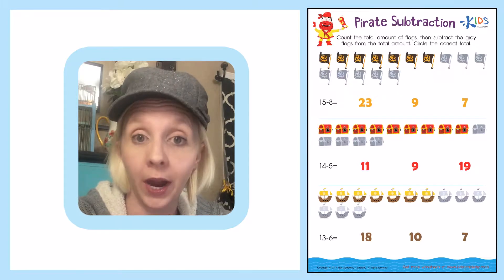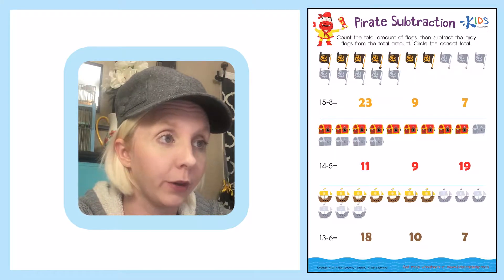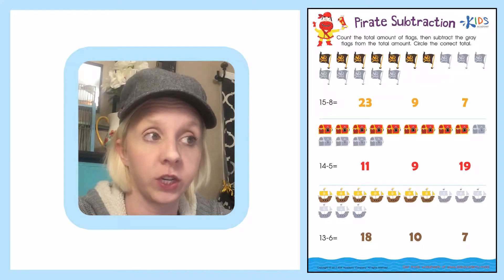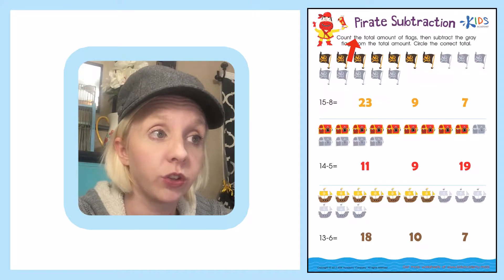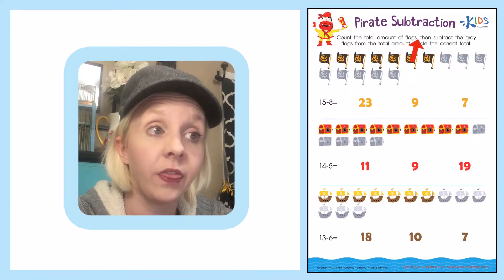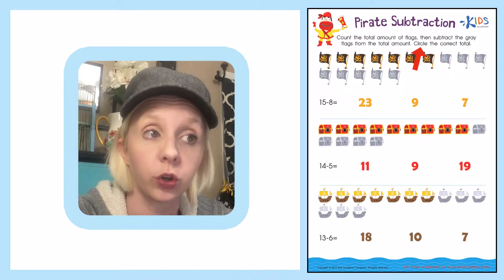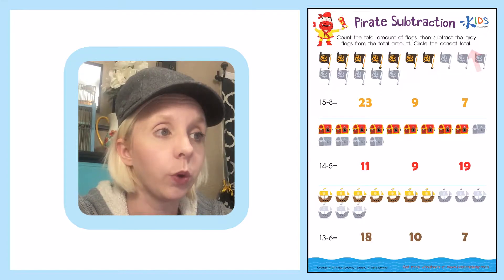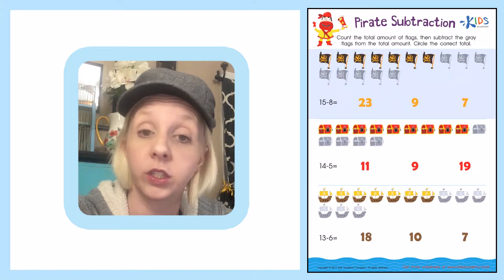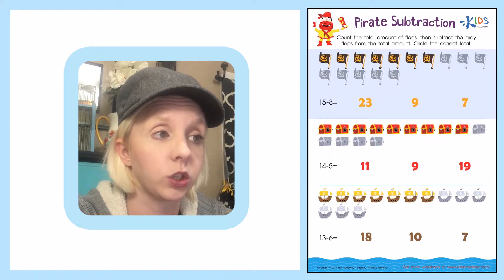The name of our worksheet is called Pirate Subtraction. We've got a little pirate and his parrot right up here. Let's read the directions. It says count the total amount of flags, then subtract the gray flags from the total amount. Circle the correct total. So we're going to count up the total amount of flags to start off with. Let's go ahead and get started.